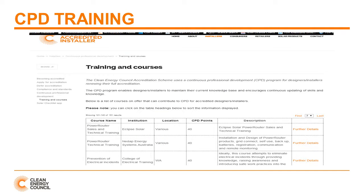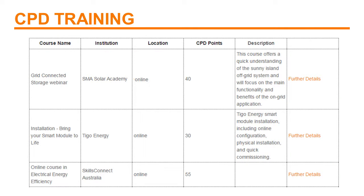Continuing with CPD, the list of eligible courses is not in the installer login area. If you're looking for available courses, go to the public Solar Accreditation homepage and click Installers, then select Continuous Professional Development and Training and Courses. From here, you'll see the course name, provider, points, etc. Note that you can sort courses based on the headings — for example, if you wanted to find online courses, simply click on Location and navigate to those courses. This also applies to searching based on courses in your state.